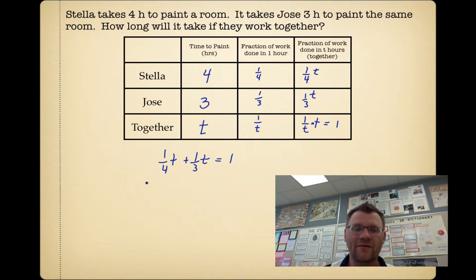We can solve this thing by multiplying everything by 12. We end up getting 3t + 4t = 12. That gives me 7t = 12. So t equals 1.71 hours, and exactly that would be 1 hour and 42 minutes.